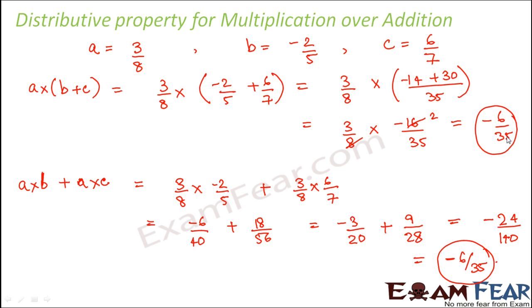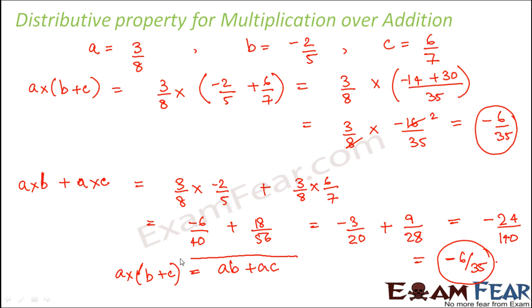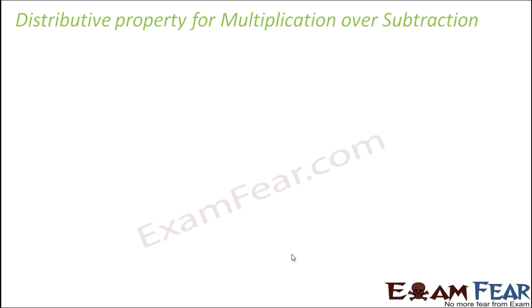Both sides are equal, so we can confirm that a into (b plus c) equals ab plus ac. This proves the distributive property of multiplication over addition. In a similar way, we can also prove the distributive property of multiplication over subtraction.